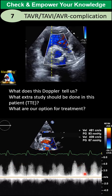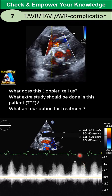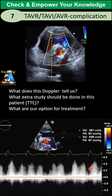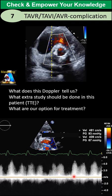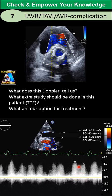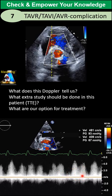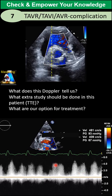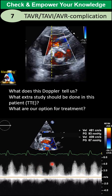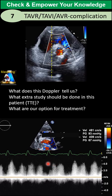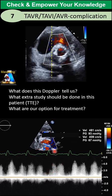Besides the measurements shown here, you can see two peaks — what are those measurements for, and why do you measure them? Additionally, what extra measurements do we need to perform on this Doppler beyond what is already shown?